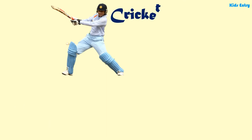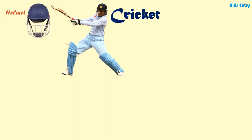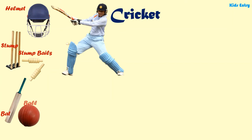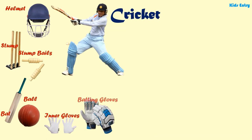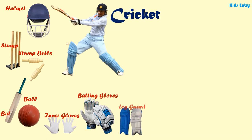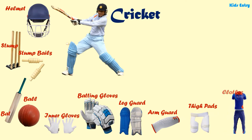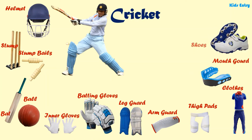Cricket: helmet, stump, stump bales, bat, ball, inner gloves, batting gloves, leg guard, arm guard, tie pads, clothes, mouth guard, shoes, abder guard.